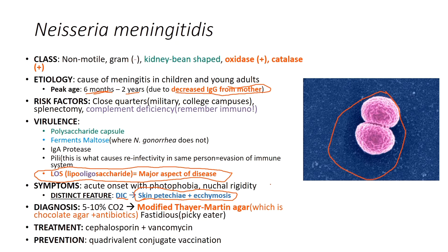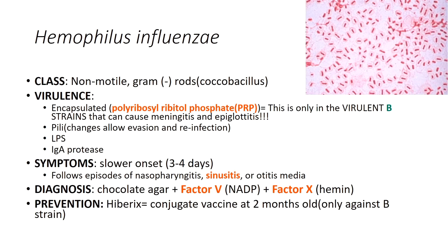Neisseria meningitidis is grown on modified Thayer-Martin agar with CO2. Treatment is cephalosporins plus vancomycin, which you'll use in clinical rotations. A conjugate vaccine is available for prevention. Next is Haemophilus influenzae — a non-motile gram-negative rod or coccobacillus. The virulent B strain has a polyribosyl ribitol phosphate (PRP) capsule, which is its key virulence factor. This capsule is only expressed in type B strains; other strains cause sinusitis and otitis media but not meningitis or epiglottitis.